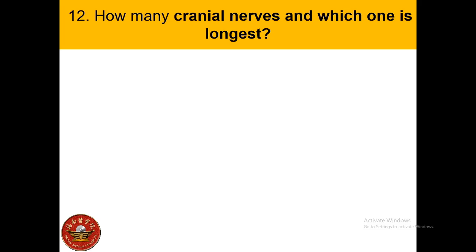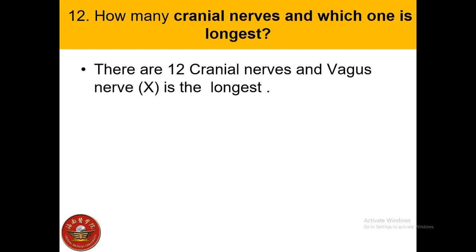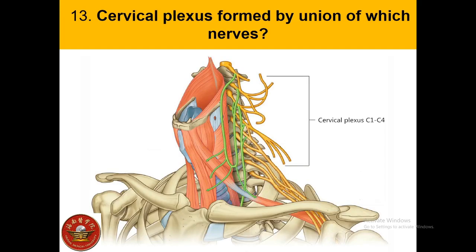There are 12 cranial nerves, and the vagus nerve — number 10 — is the longest cranial nerve. The cervical plexus is formed by the union of the anterior rami of C1, C2, C3, and C4.